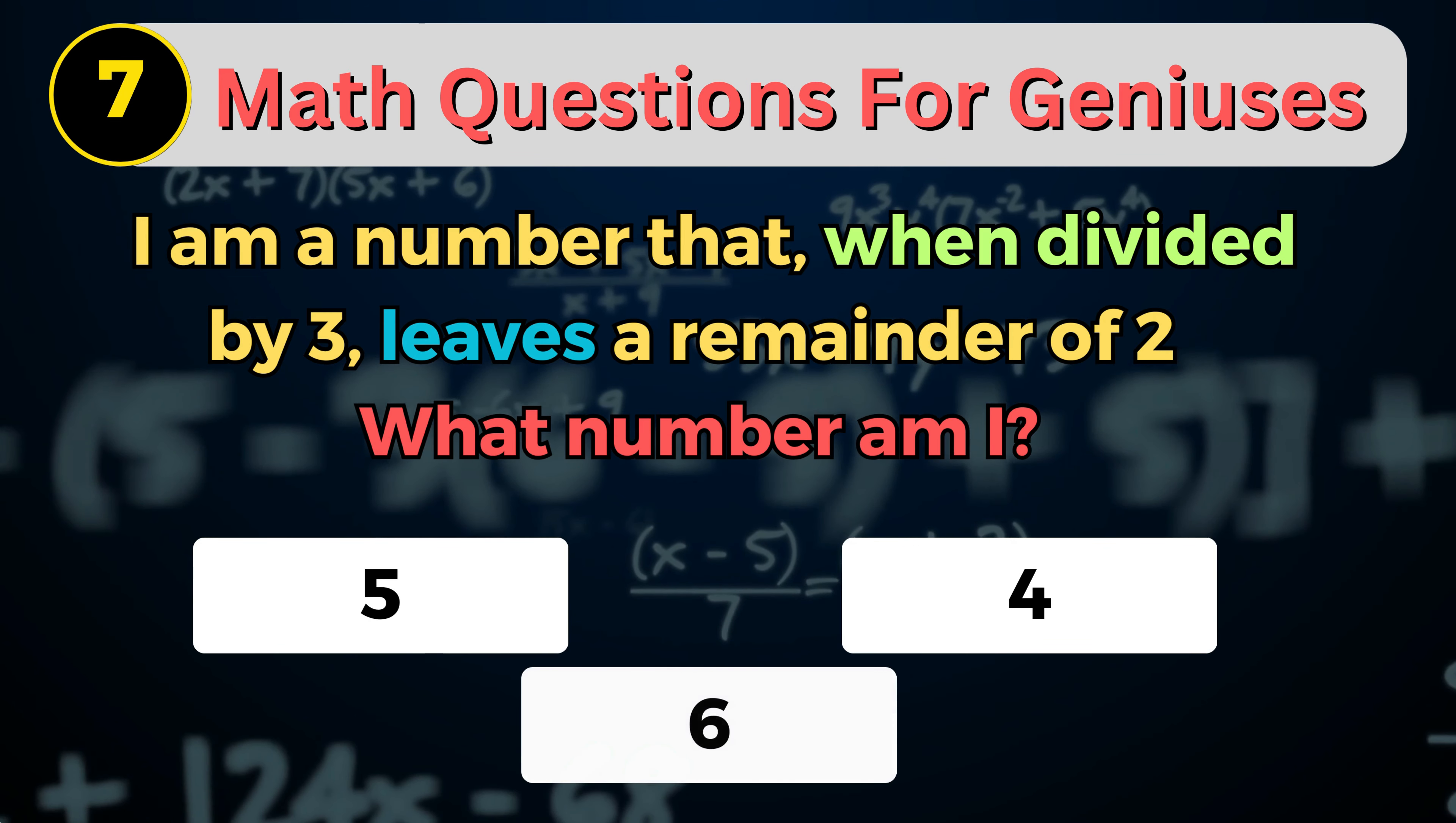Number 7. I am a number that, when divided by 3, leaves a remainder of 2. What number am I?